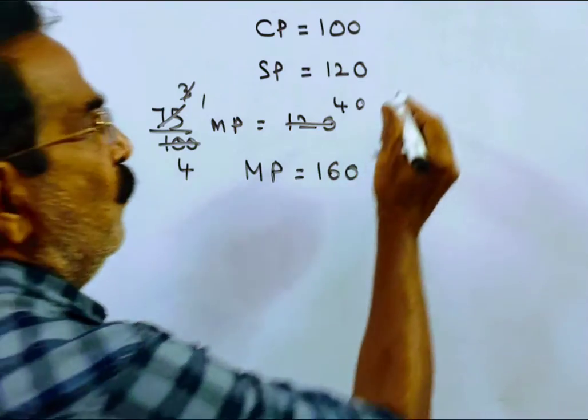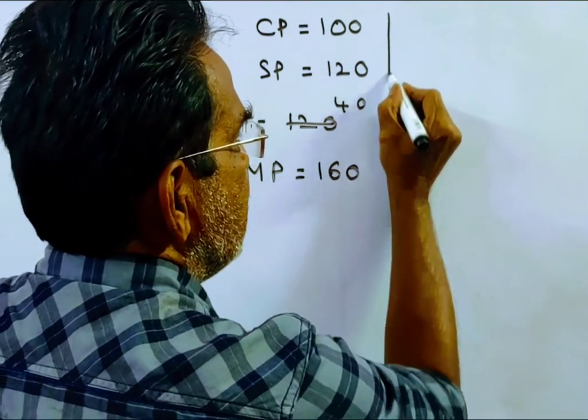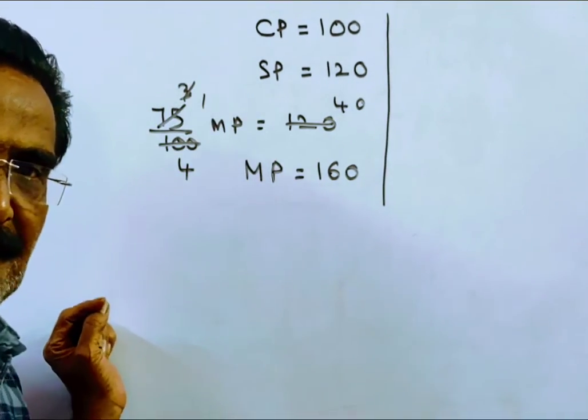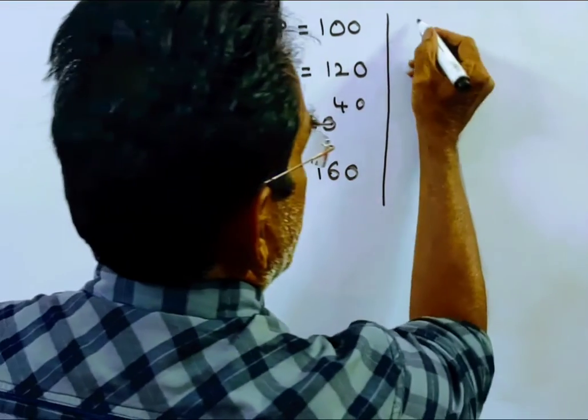Now cost price is increased by 20%, so cost price becomes 120, and he wants to earn a profit of 8%.